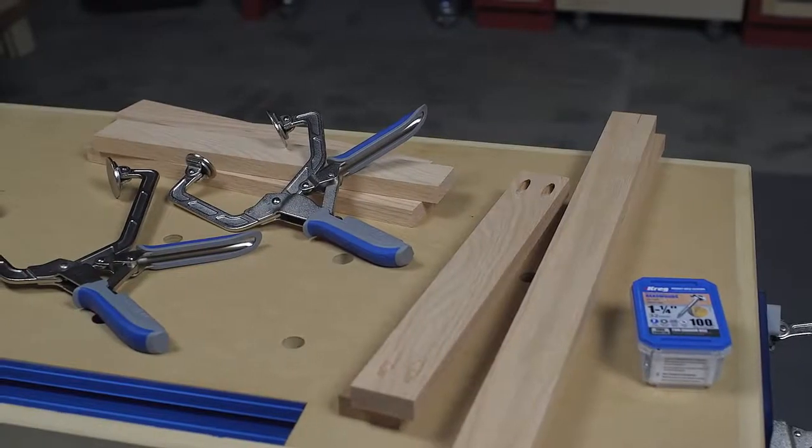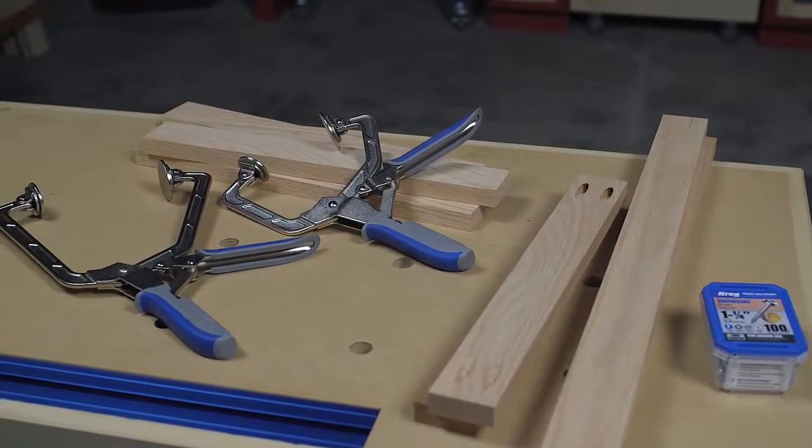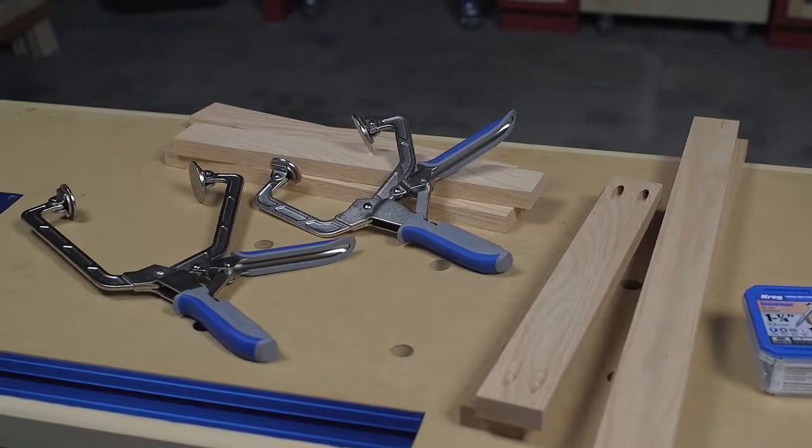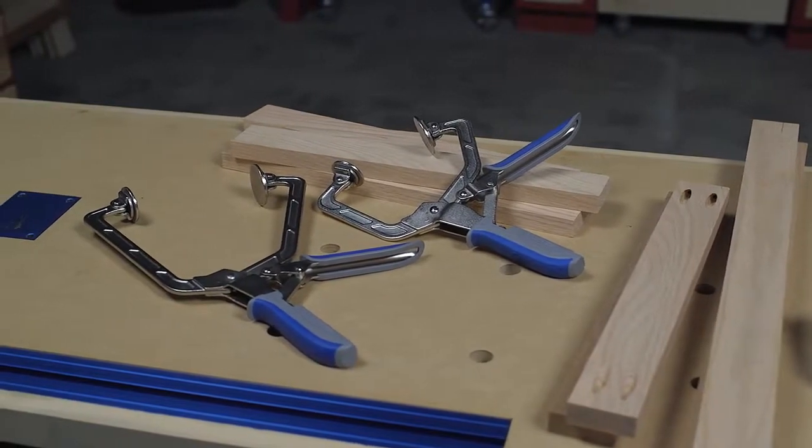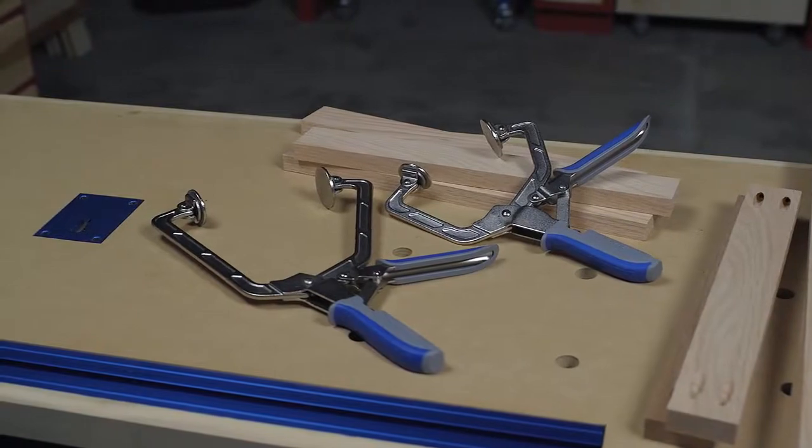Wood project clamps are available in two sizes. One has a three inch reach and holds materials up to three inches thick, while the other has a six inch reach and holds materials up to five inches thick.